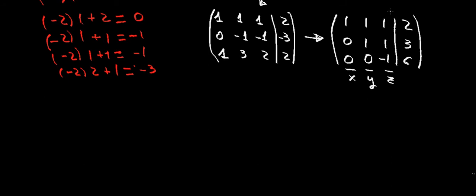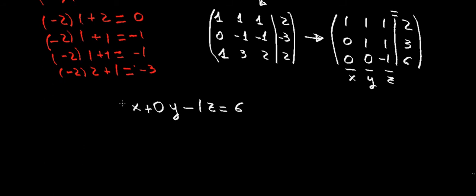We always start from the bottom row, where there are two zeros. That row gives us: minus 1 times z equals 6. There's no x and no y because their coefficients are zero. So z equals minus 6.